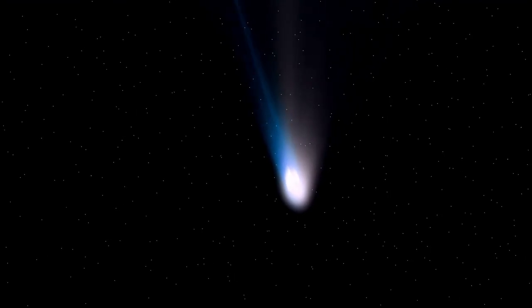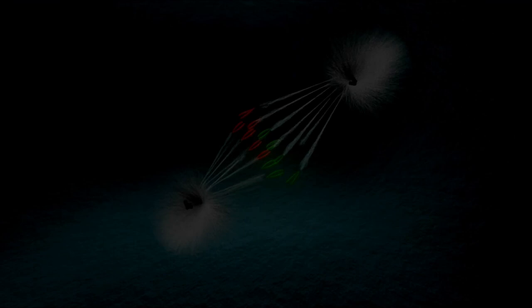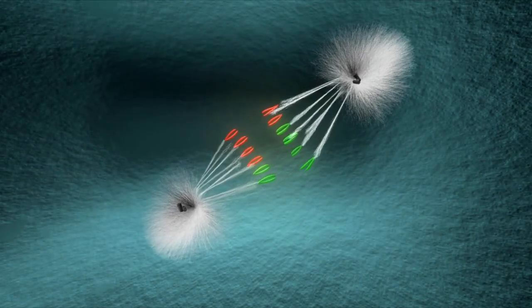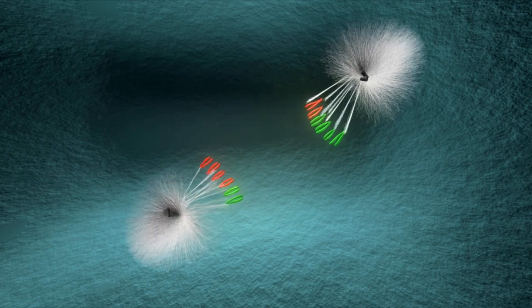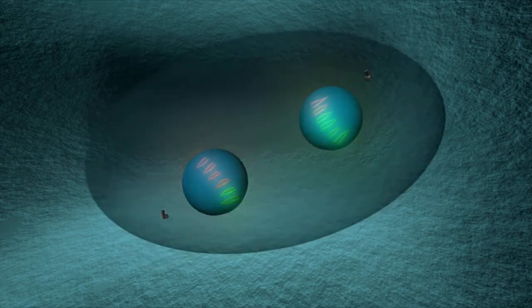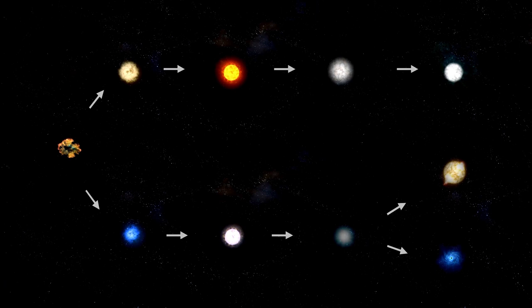The Heliopause is a dynamic and ever-changing region where the outward pressure of the solar wind, a stream of charged particles emitted by the sun, is finally overcome by the opposing pressure of the interstellar medium. This invisible yet crucial boundary acts as the outermost shield of our solar system, protecting it from incoming galactic cosmic rays and other forms of high-energy radiation originating from deep space.